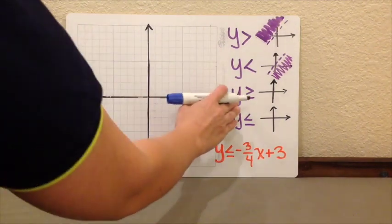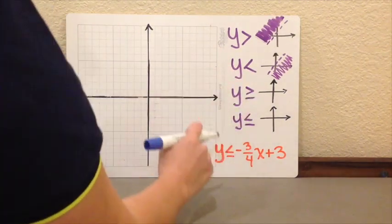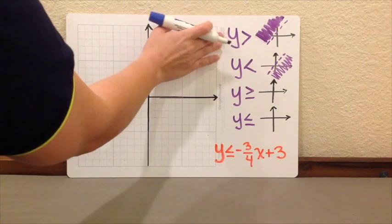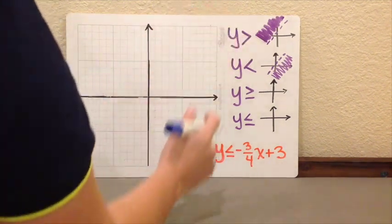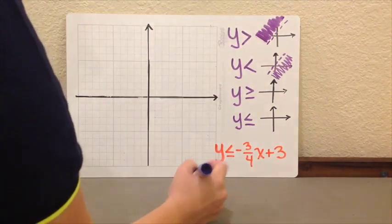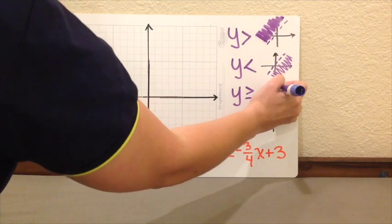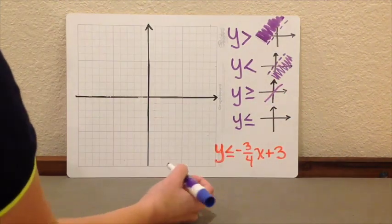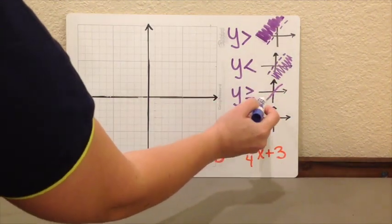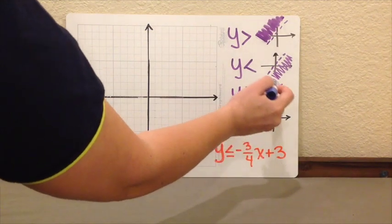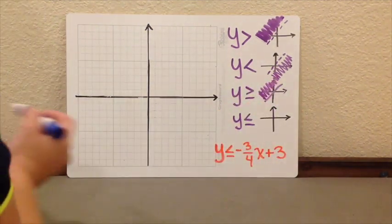Now we have y is greater or equal. So it is very similar to the first case that we see when y is greater. It's only that now your line is going to be a solid line. And again, since y is greater, you are going to shade the top part of your line or your graph.